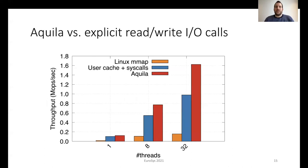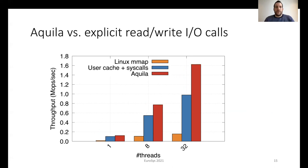First, we compare Aquila with explicit read-write system calls and provide an evaluation in terms of throughput using RocksDB. In this figure, the X-axis shows the number of threads and the Y-axis shows the throughput in millions of operations per second. We show three bars: the orange one is for RocksDB with Linux mmap, the blue one for RocksDB with a user space cache and system calls, and the red one for RocksDB with Aquila. With a single thread, Aquila provides about 1.2 times higher throughput compared to a user space cache. With 8 threads, this increases to 1.4 times, and with 32 threads to 1.6 times. Aquila outperforms a user space cache with system calls to access persistent storage. The benefits of Aquila compared to Linux mmap are even higher: with a single thread, Aquila provides 7.5 times higher throughput, with 8 threads 7.2 times, and with 32 threads 10.4 times higher throughput.